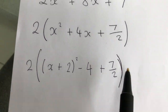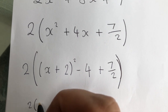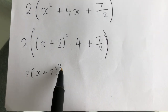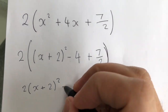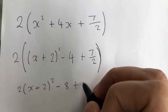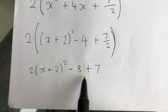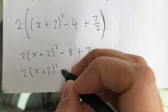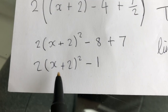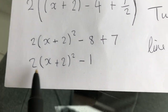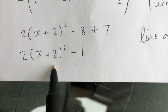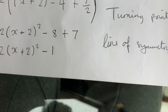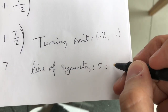At this stage it's good to times that 2 back in. So we get 2 brackets x plus 2 squared — the 2 does not go into that bracket because it has a squared on it, so it stays on the outside. 2 times minus 4 is minus 8, and 2 times 7 over 2 takes it back to plus 7. Then we tidy up the outside: 2(x + 2)² minus 8 plus 7 is minus 1. Done! And if asked for the turning point or line of symmetry, this 2 does not affect the x value, so the turning point is minus 2, minus 1, and the line of symmetry is x equals minus 2.